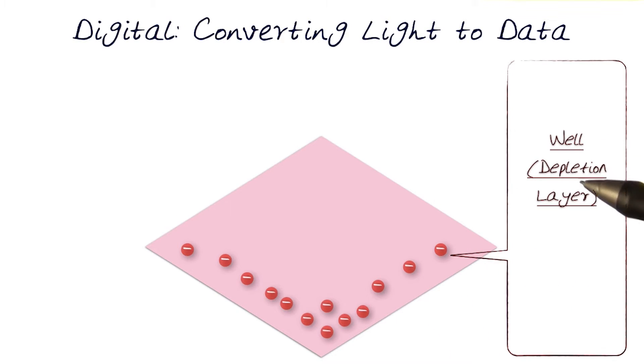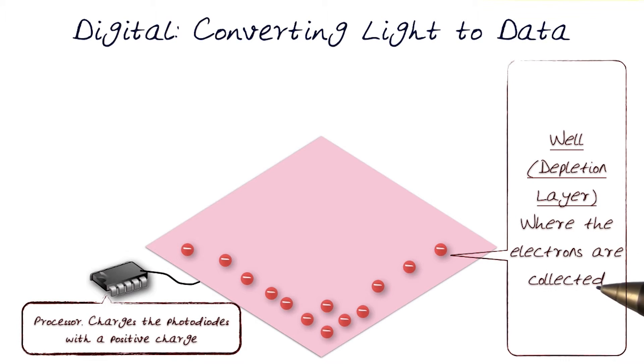The final layer is the well, or sometimes referred to as a depletion layer. This is where electrons are collected, and usually there is a processor that charges the photodiodes with a positive charge, and then all the negative charges are stored and collected on this layer.